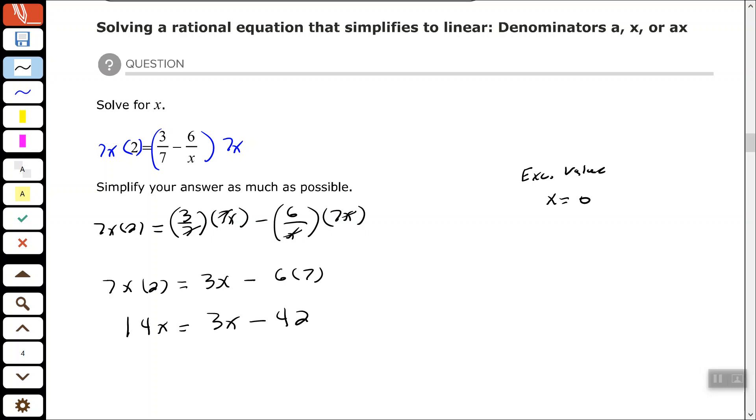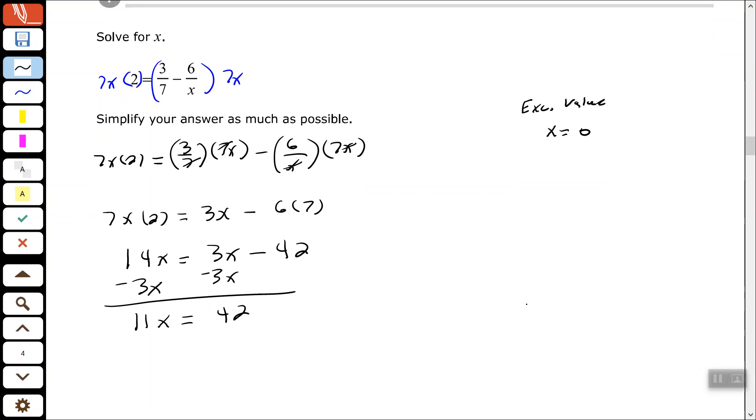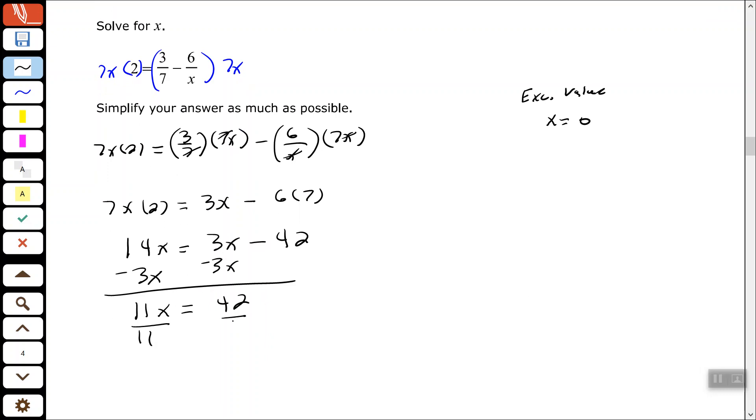And now we want to solve this equation. So let's combine our variable terms. So let's subtract 3x from both sides. And last but not least, let's divide both sides by 11.